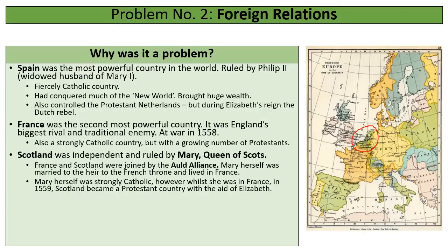Scotland is an independent country ruled by Mary Queen of Scots. Scotland and France are allies — their alliance is known as the Old Alliance. Mary is actually in France at the start of the story, married to the heir to the French throne. Although Mary herself is a strong Catholic, in 1559 Scotland becomes a Protestant country with the aid of Elizabeth. Elizabeth is surrounded by three very powerful Catholic countries — Spain, France and Scotland.